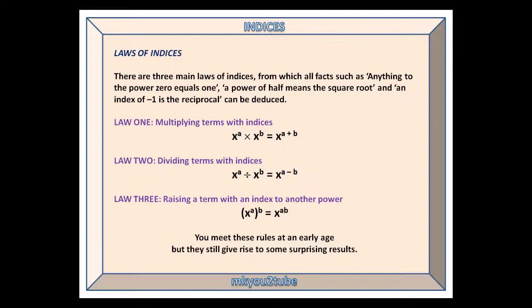Law 1 is for multiplying terms with indices: x^a × x^b = x^(a+b). Law 2 is for dividing terms with indices: x^a ÷ x^b = x^(a-b). And Law 3 is for raising a term with an index to another power: (x^a)^b = x^(ab). You meet these rules at an early age, but they still give rise to some surprising results.